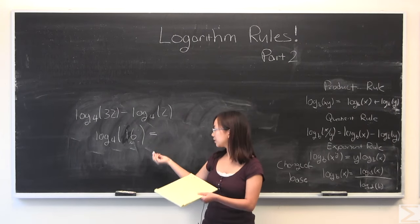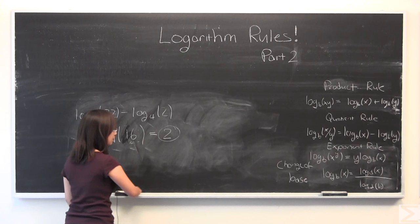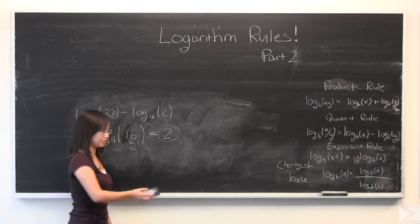And very simply, 4 to the power of 2 is 16. So this suddenly became much solvable. All right, so for the next part, I'll be going over the exponent rule.